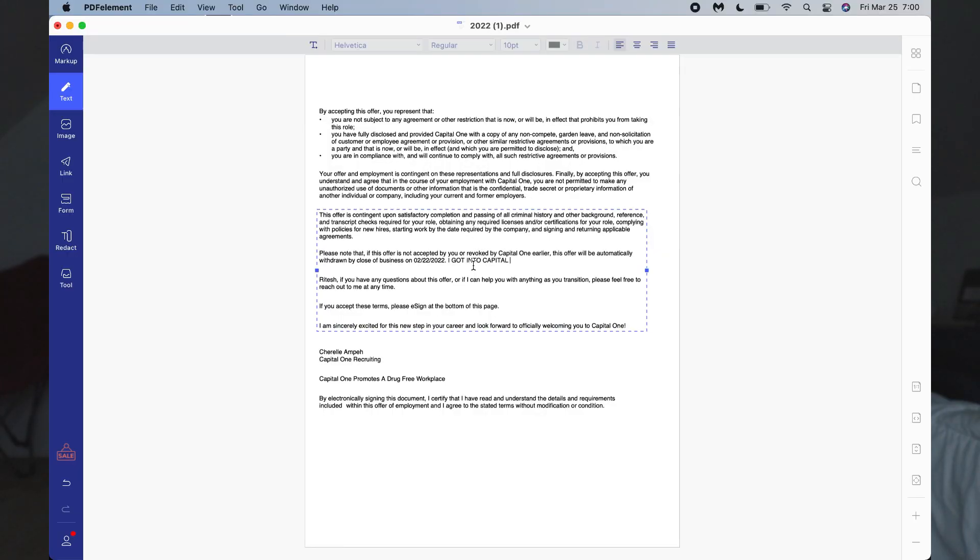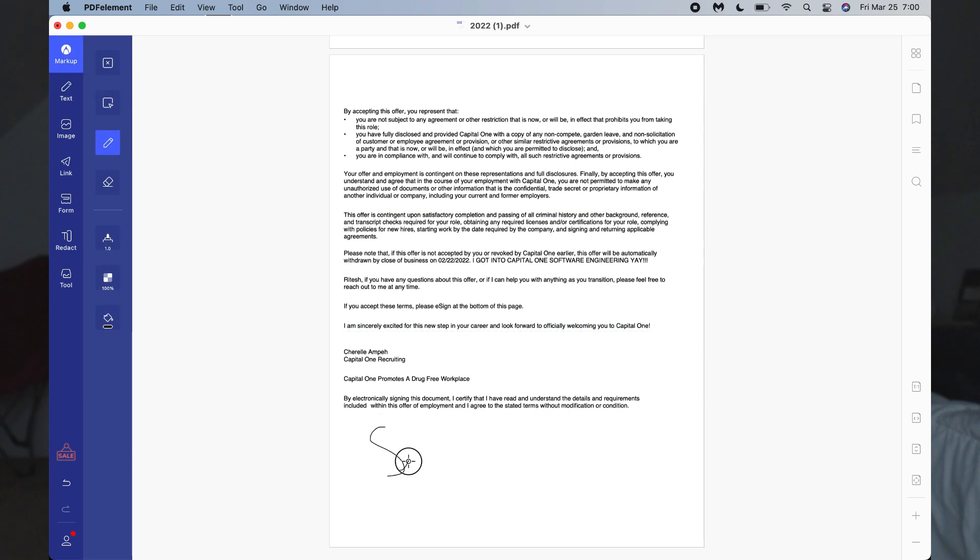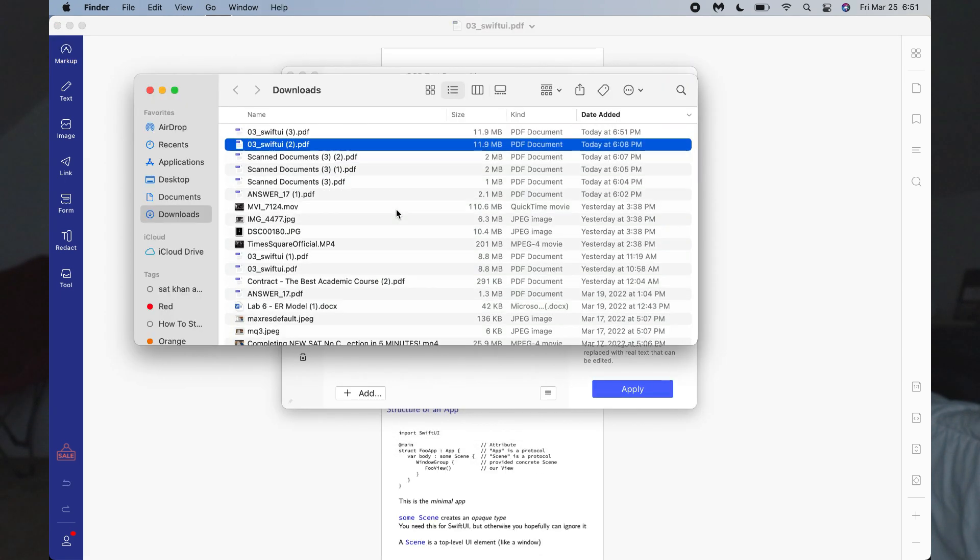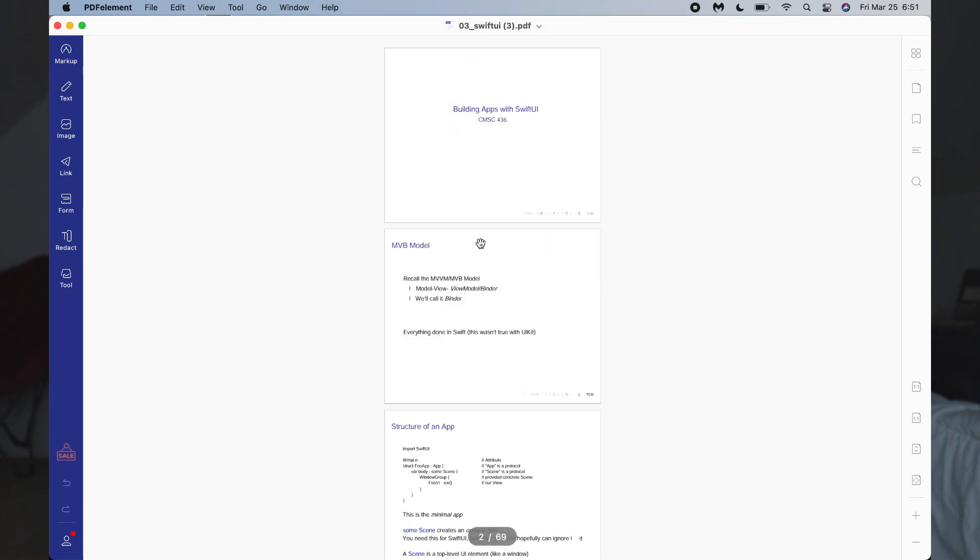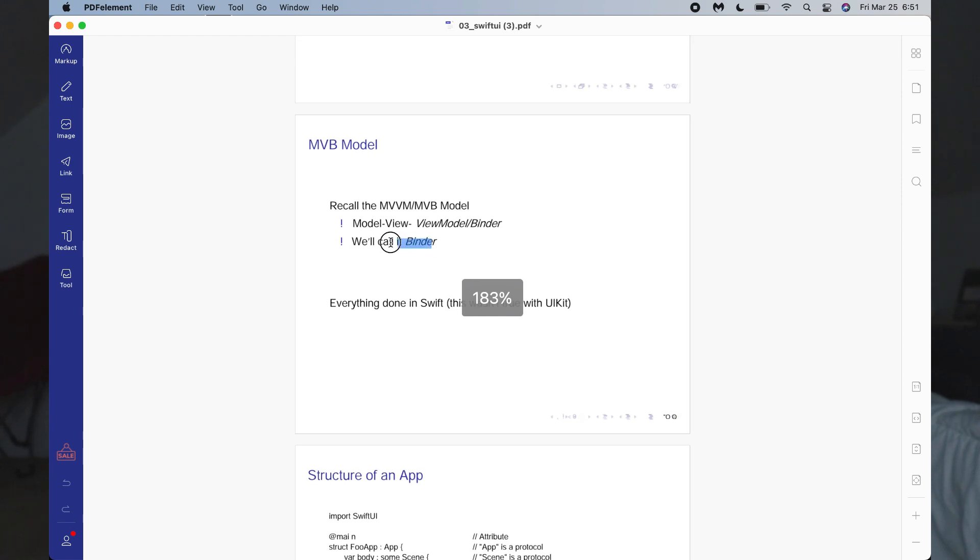The PDF Element Pro has so many tools you can use to edit a PDF. For example, you can customize text, edit text, do markup, sign documents, and use an amazing OCR text recognition tool, which takes a scanned document and translates it into text that you can now edit.